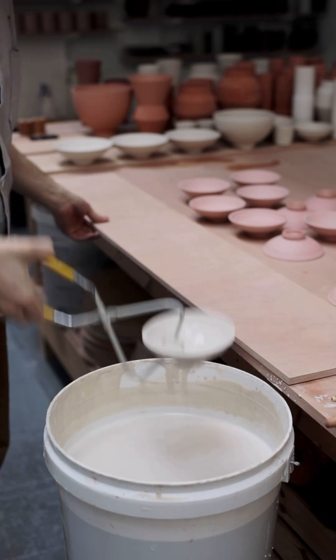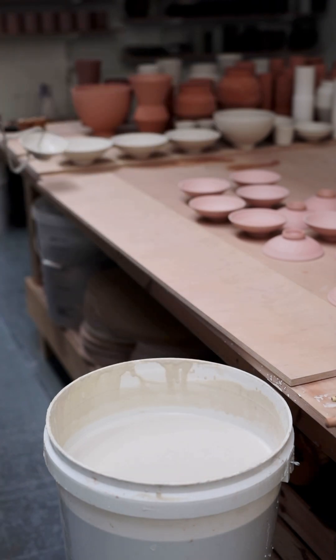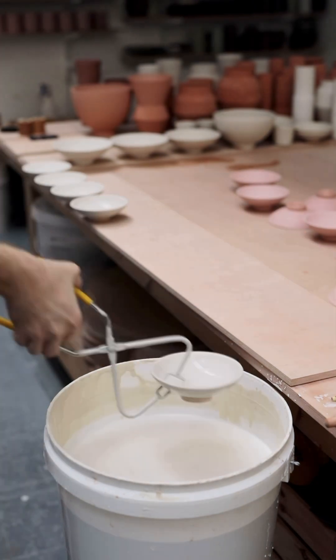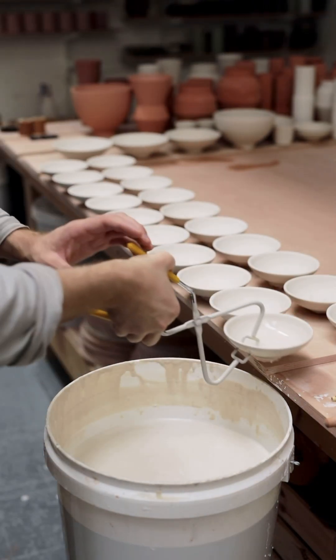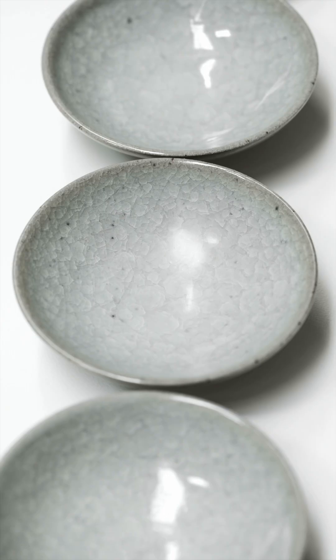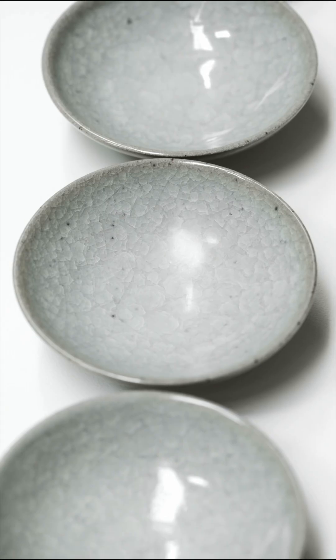These bowls are then dipped into this white felspathic crackle glaze. They're submerged for about 5 or 6 seconds so a thick enough layer can adhere to them. These pots are then tidied up and then they're reduction-fired to 1,290 degrees Celsius, resulting in this.